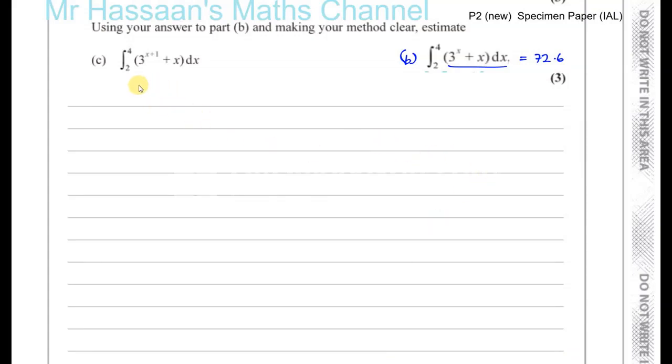Okay, so for part C, they've asked us to find the definite integral of 3 to the power of x plus 1 plus x with respect to x. The area under this curve between 2 and 4, using the answer to part B in order to do so.